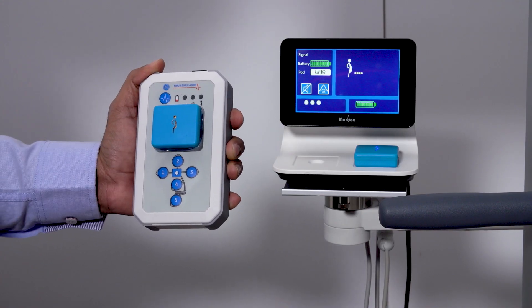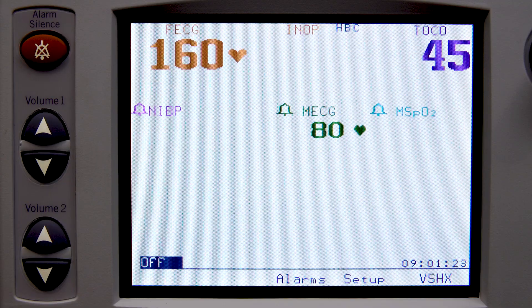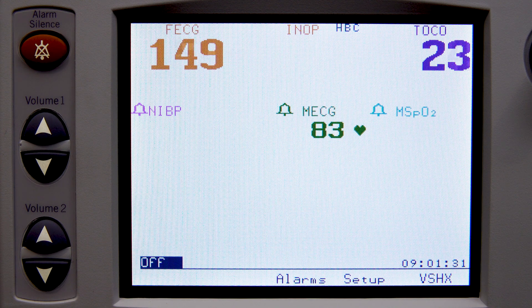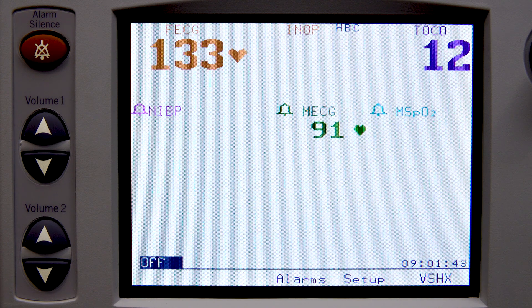Similarly, the variable mode simulates maternal heart rate, fetal heart rate, and uterine activity signals, but at changing rather than constant values in a sawtooth pattern. It shows a maternal heart rate of 80 to 100 plus or minus 3 beats per minute, fetal heart rate at 120 to 160 plus or minus 3 beats per minute, and a uterine activity of 0 to 50, plus or minus 10.